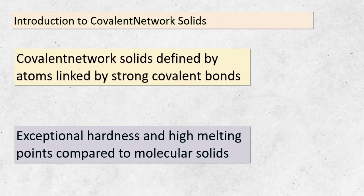Today, we're delving into the intriguing world of covalent network solids. These are unique types of solids where atoms are intricately interconnected through robust covalent bonds. These bonds are exceptionally strong — much stronger than the forces between molecules in other types of solids. This characteristic leads to some remarkable properties: these solids boast incredible hardness and high melting points, setting them apart from other types of solids like molecular ones. Carbon showcases two prominent examples of covalent network solids: diamond and graphite. While they might appear similar, they exhibit vastly different properties due to their distinct atomic arrangements.